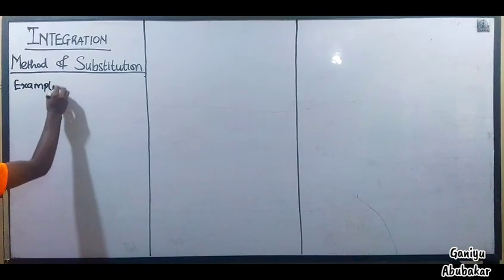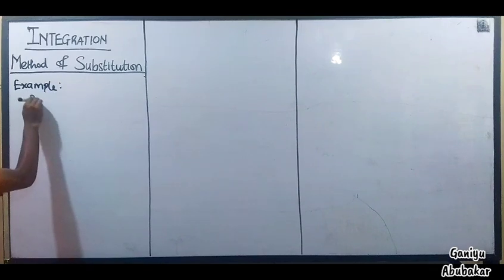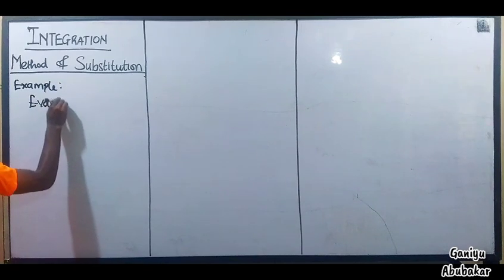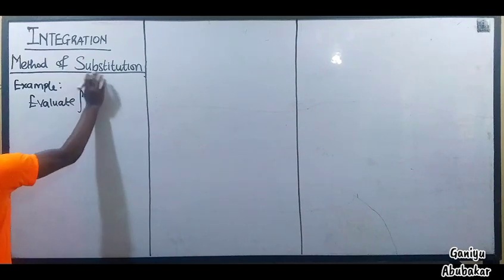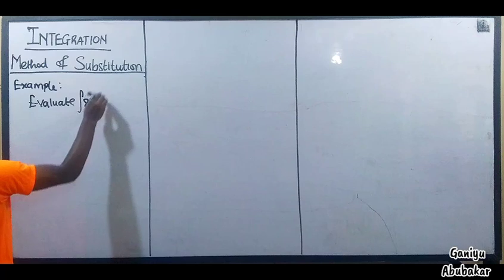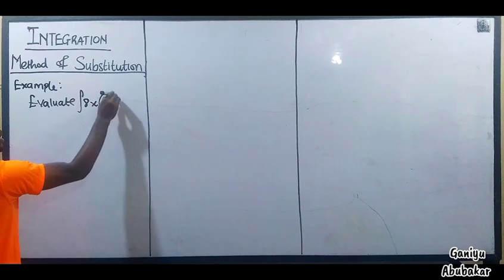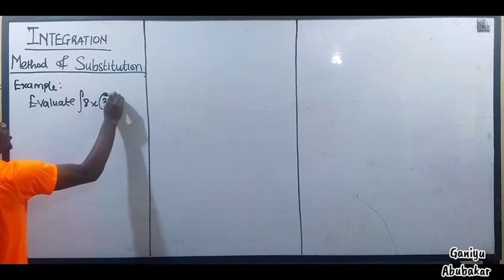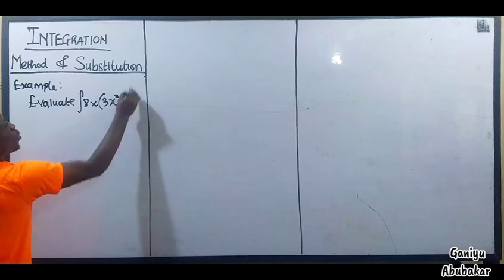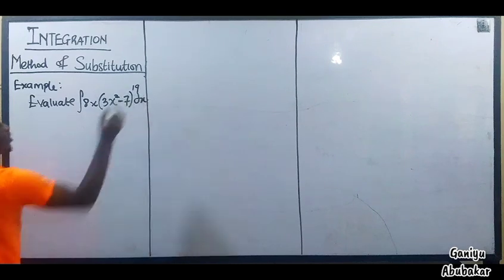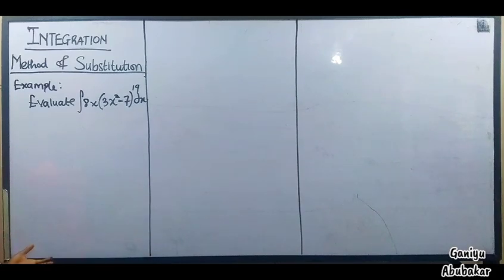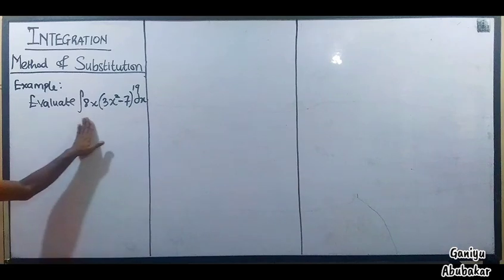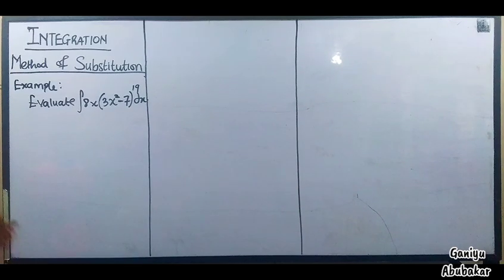For example, if I want to evaluate the integral of 8x times (3x² - 7) to the power 19 dx. Of course, I could use the general method, but the problem says to solve this using the substitution method. How does this work?